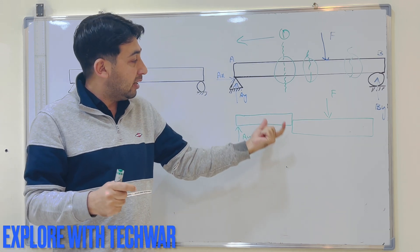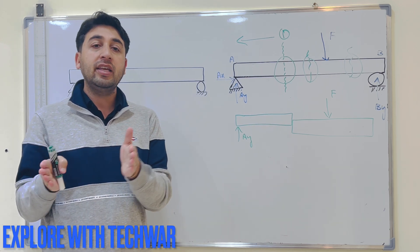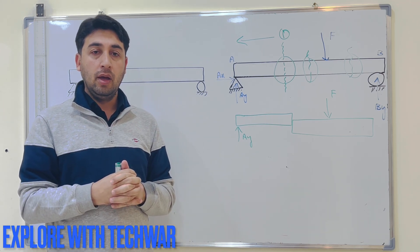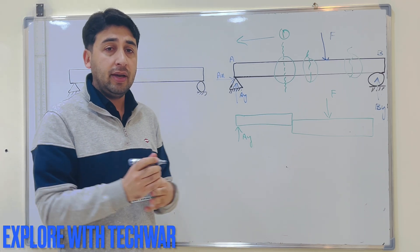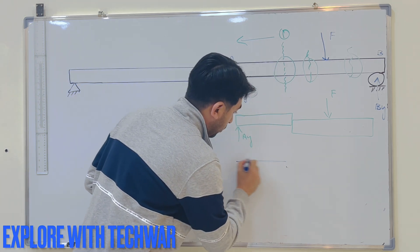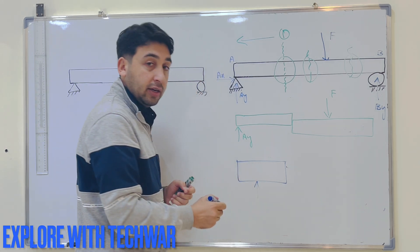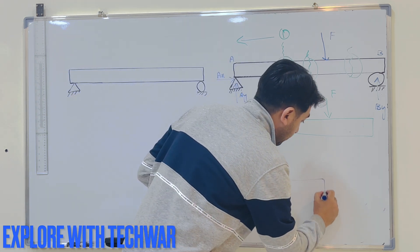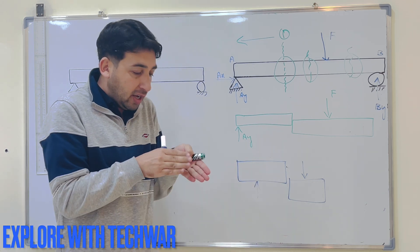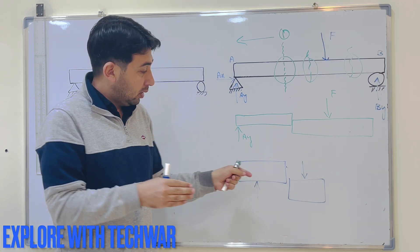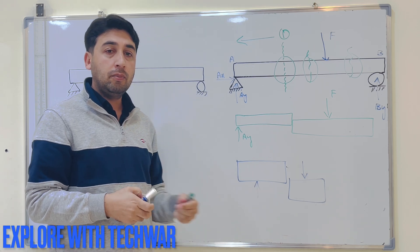At any cross section of the beam, we measure the shear forces by summing all the forces on either side of that section. When we solve these types of problems, if we have one side of the beam going up and the other side going down — or this type of shear where on the left side it is going up and on the right side it is going down — this type of shear force is known as positive shear.